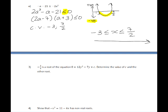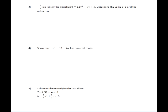Let's take a look now at question 3. Negative 3 over 4 is the root of the equation 0 is equal to 12y squared minus 7y plus c. Determine the value of c and the other root. So there's actually two things to do here. We first need to find the value of c, and we need to find the other root. And remember that the word root just means a solution to that equation.